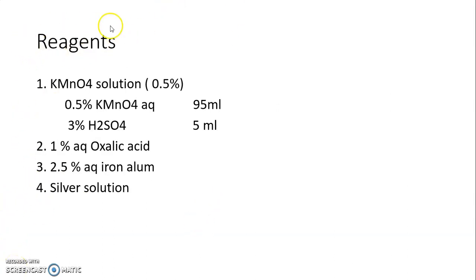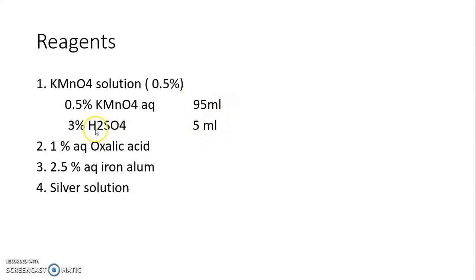The reagents used in reticulin staining: Number 1 is 0.5% KMnO4 aqueous solution — 95 ml and 5 ml of 3% sulfuric acid. Number 2 is 1% aqueous oxalic acid for bleaching. Number 3 is 2.5% aqueous iron alum as mordant.